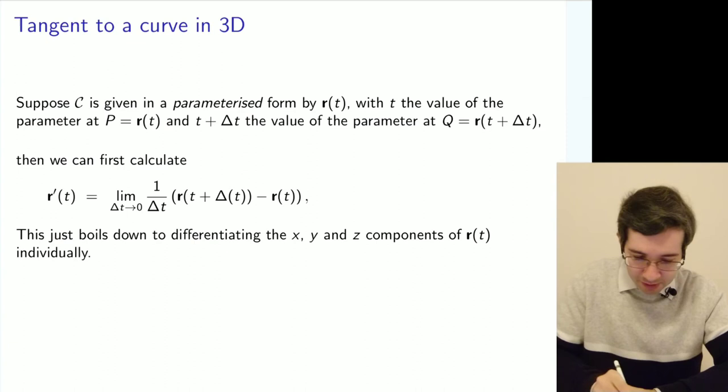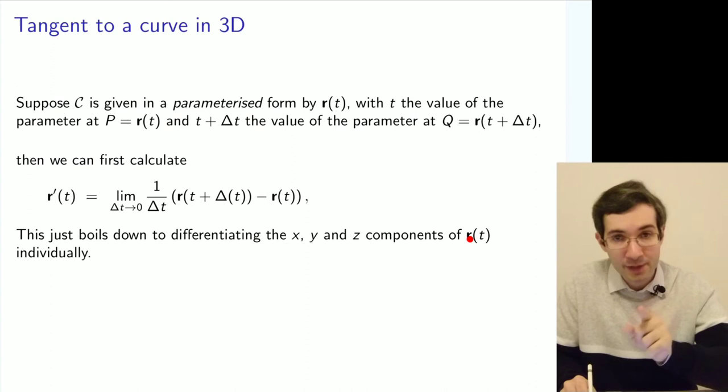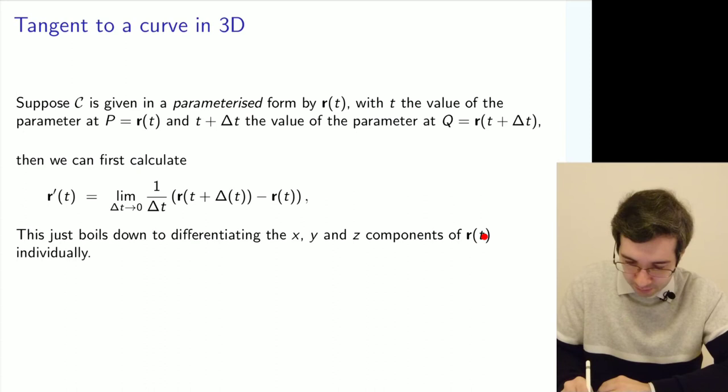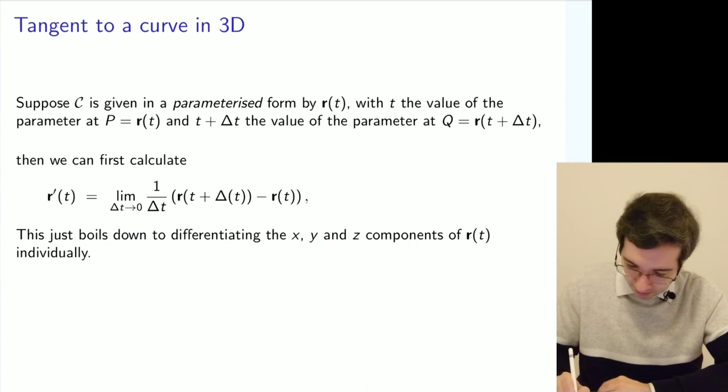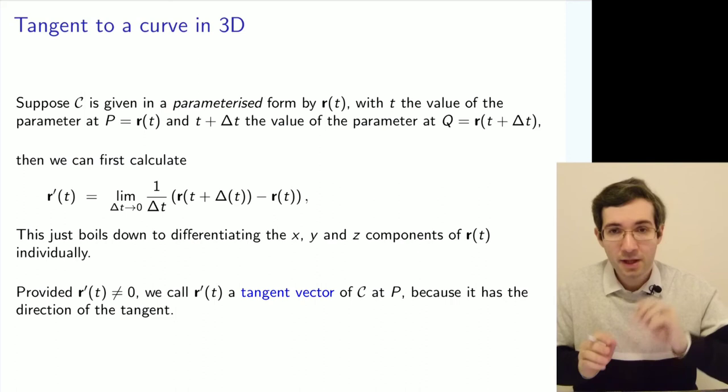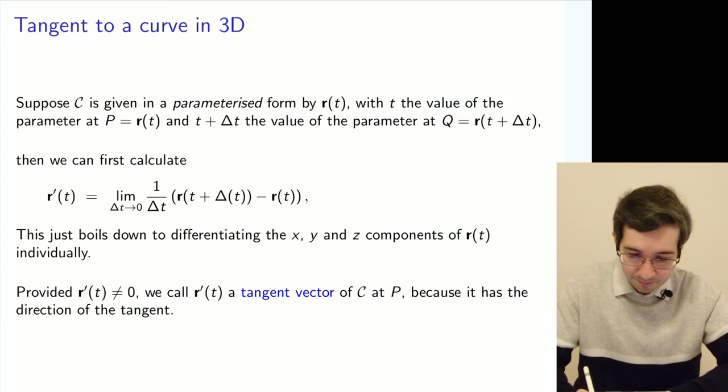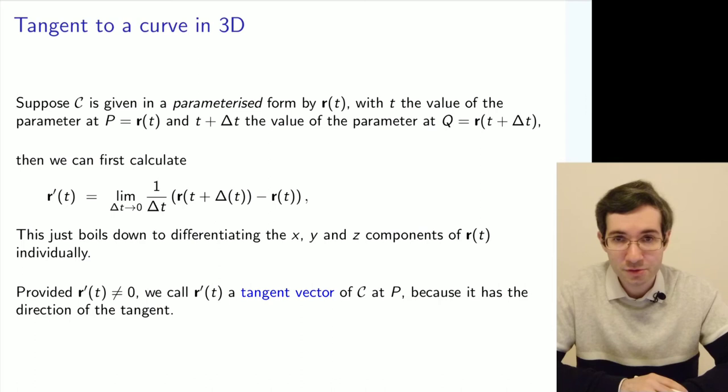What is useful, we can differentiate not the whole thing at once, but we can differentiate this position vector component by component. We can differentiate first x, then y, then z with respect to parameter t. That will be called a tangent vector. Taking a derivative with respect to parameter t of the position vector will get a tangent. That's what I want you to bear in mind.